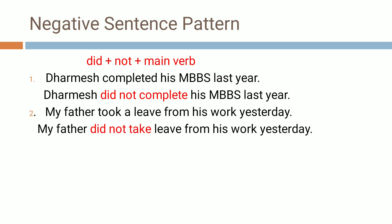Now, negative sentence — how can we make the negative of past tense? It's very simple: 'did' plus 'not', because it is a negative sentence, and then the simple form or present tense form of the verb. Look at the first example: 'Dharmesh completed his MBBS last year.' Two things here show it is past tense — one is the verb is in 'ed' form: completed; and the second clue is the timing word: last year. Negative: 'Dharmesh did not' — we have to change 'completed' into its simple form: 'complete'. So: 'Dharmesh did not complete his MBBS last year.'